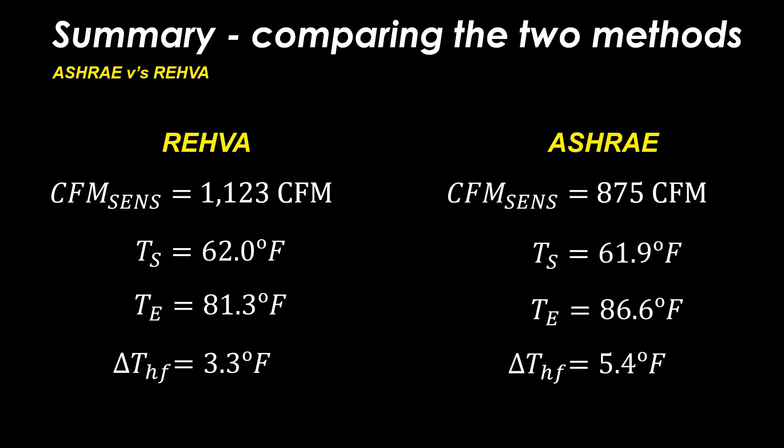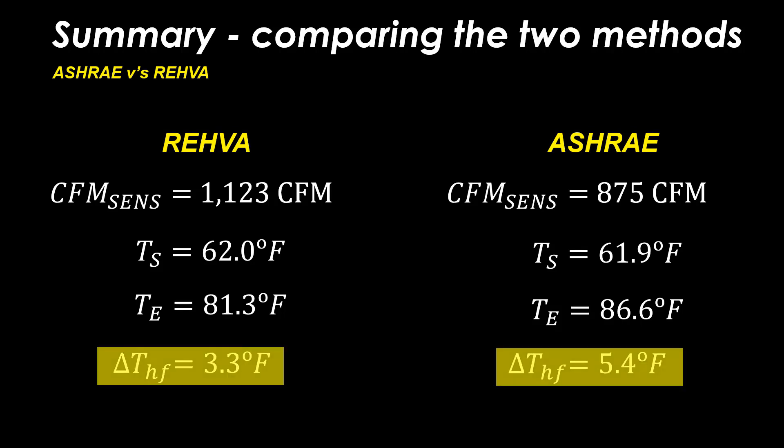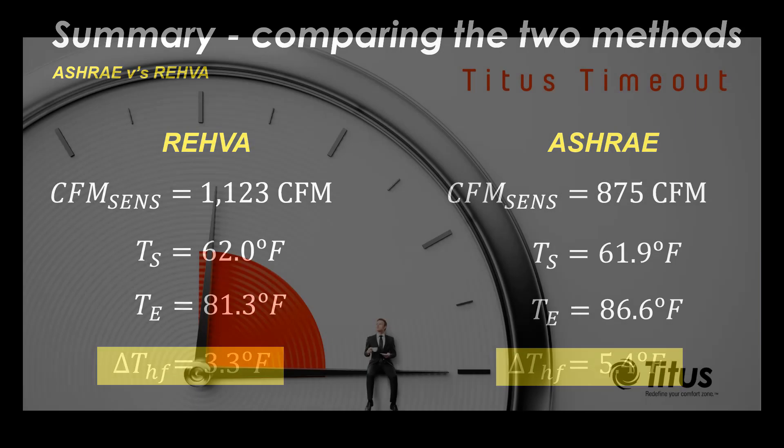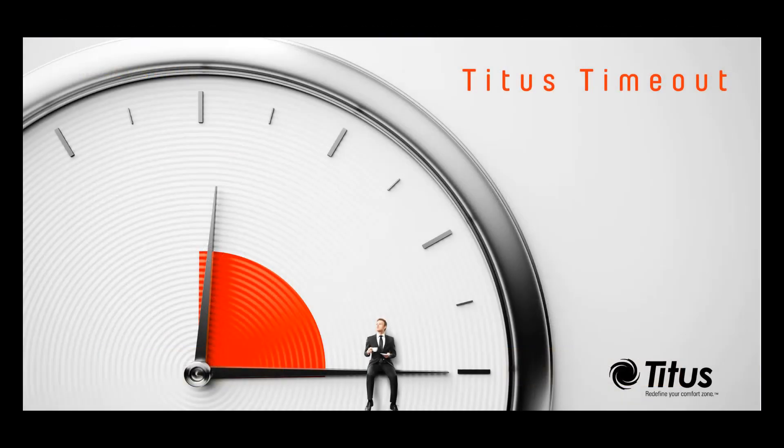Clearly, the REHVA method is more conservative, particularly as the floor to head delta T is only 3.3°F compared to the 5.4°F in the ASHRAE calculations. So that about wraps up the demo of the REHVA method.